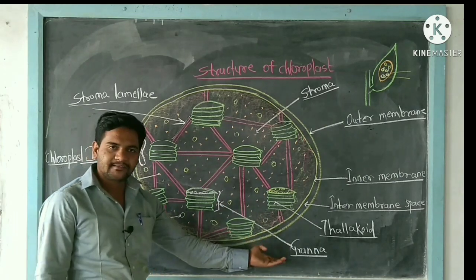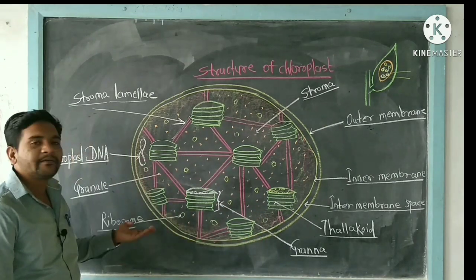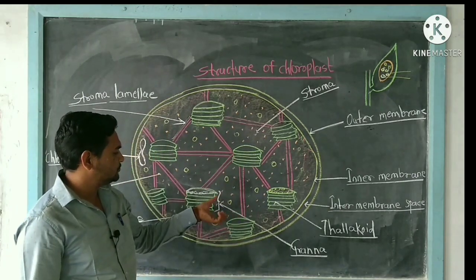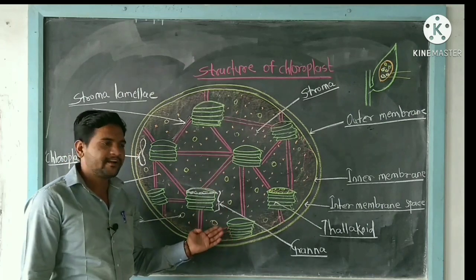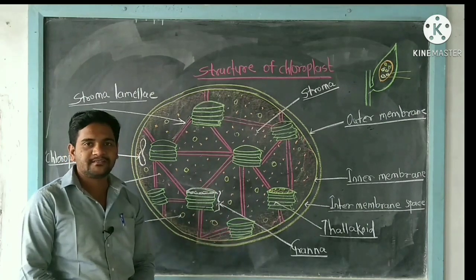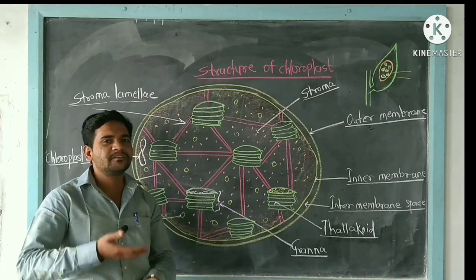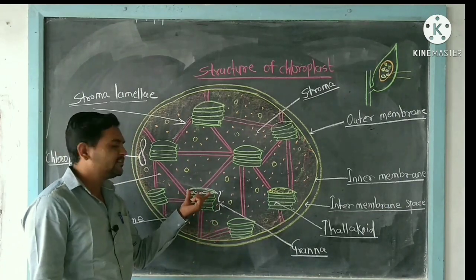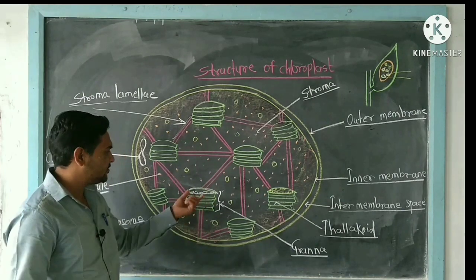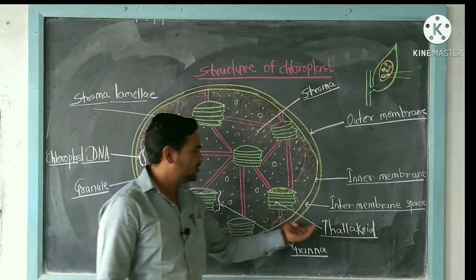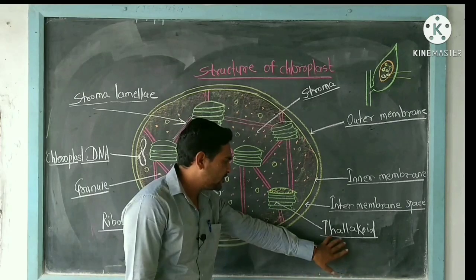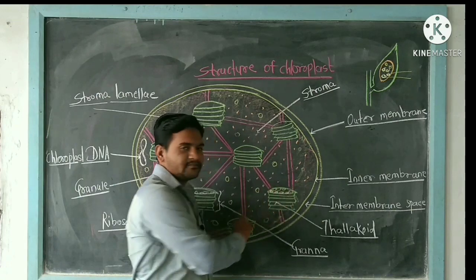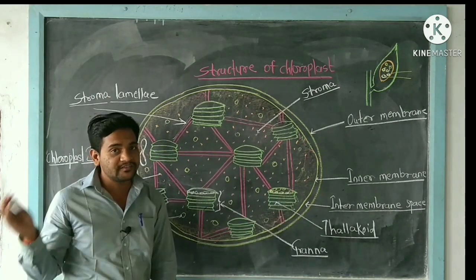Inside the stroma there are grana and DNA. Each granum is a disc-shaped structure. Inside the grana there are thylakoids present, and these thylakoids contain chlorophyll pigments. These chlorophyll pigments are responsible for photosynthesis.